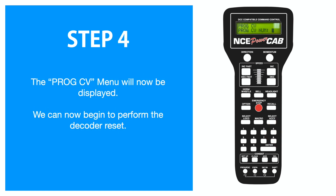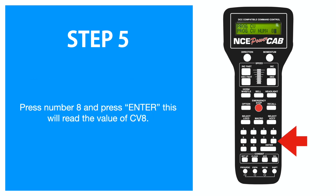This will display the Program CV menu. Now the vast majority of decoders will be reset using CV8. To access this we simply press the number eight and press the Enter key.